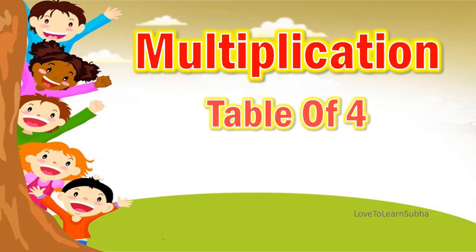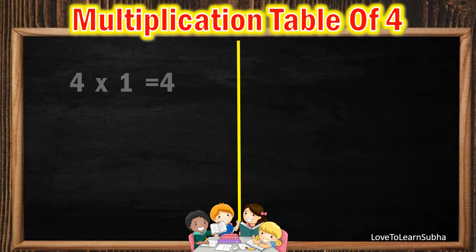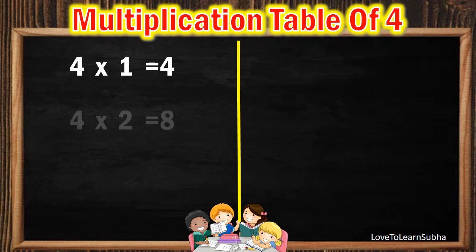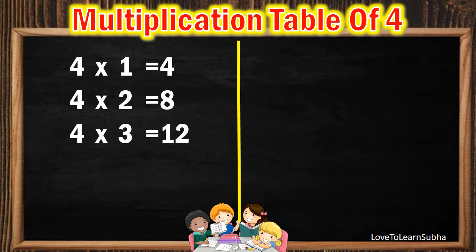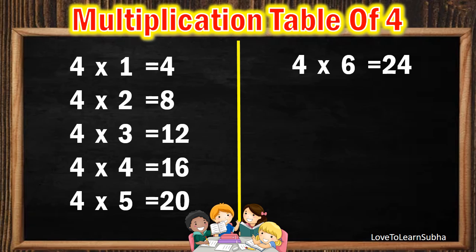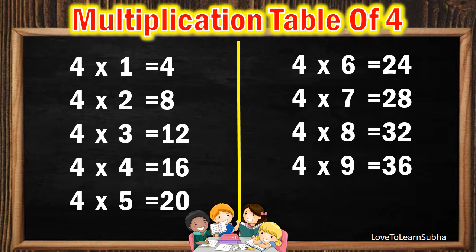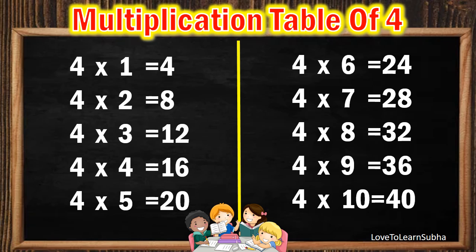Now let's repeat it once again. 4 ones are 4. 4 twos are 8. 4 threes are 12. 4 fours are 16. 4 fives are 20. 4 sixes are 24. 4 sevens are 28. 4 eights are 32. 4 nines are 36. 4 tens are 40.